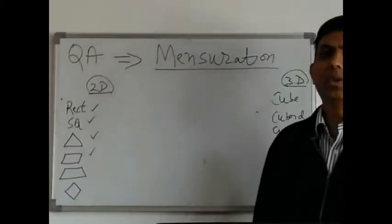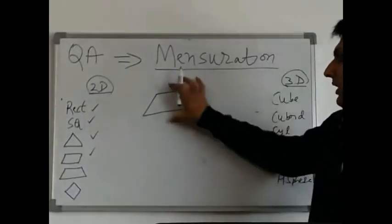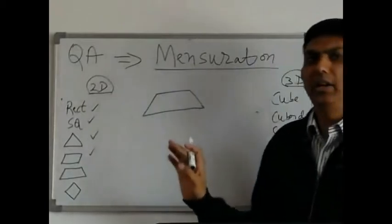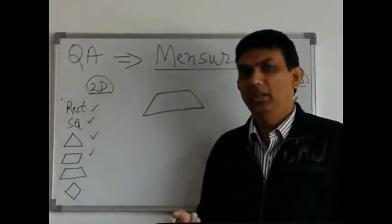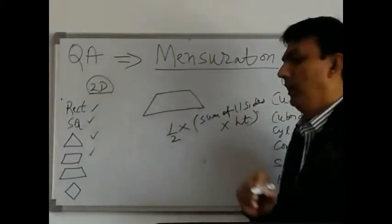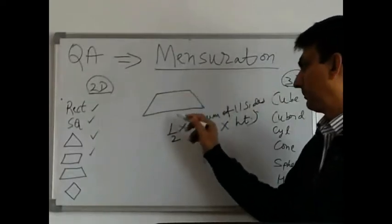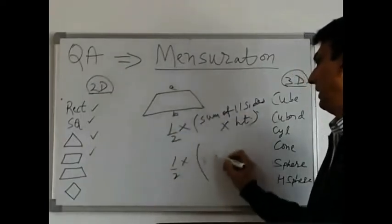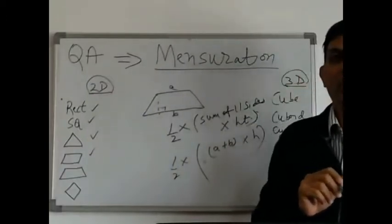Our next figure is a trapezium. A trapezium is a four-sided figure in which any two sides are parallel to each other. Perimeter is the sum of the four sides. For area, it is half into the sum of the parallel sides into height. If the parallel sides are a and b, and the height is h, then area equals half into (a plus b) into h. This is how you get the area of a trapezium.